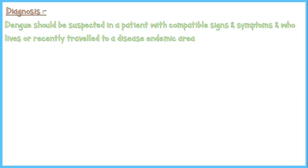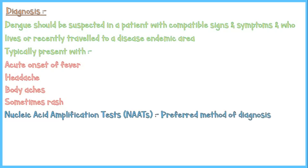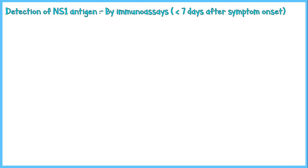Early detection of dengue infection is extremely important to prevent hypovolemic shock. Dengue should be suspected in a patient with compatible signs and symptoms who lives in or has traveled to a dengue-endemic area. Patients typically present with acute onset of fever, headache, body aches, and sometimes rash. Nucleic acid amplification tests are the preferred method of diagnosis — real-time reverse transcriptase PCR is used to detect viral genomic material and must be done within the first week of symptom onset, as the virus will no longer be detectable in the bloodstream after cessation of viremia. Detection of viral NS1 antigen by immunoassays is another reliable method, also to be done within the first week, even though NS1 antigen can persist in blood for about 12 days after symptom onset.